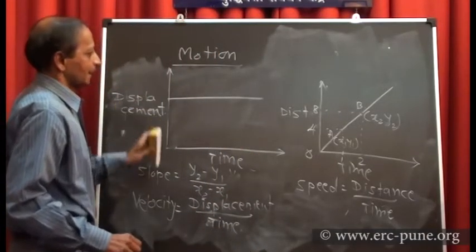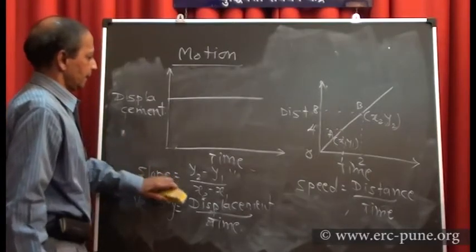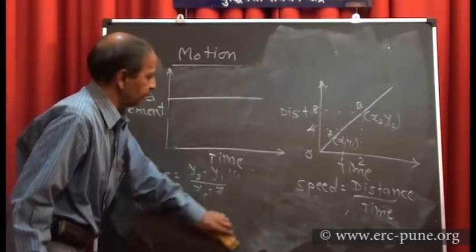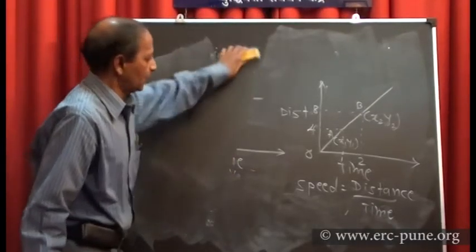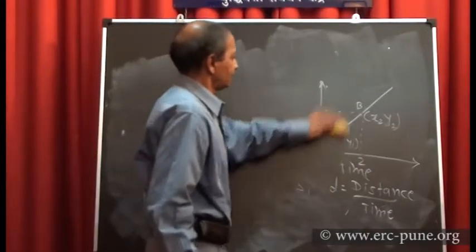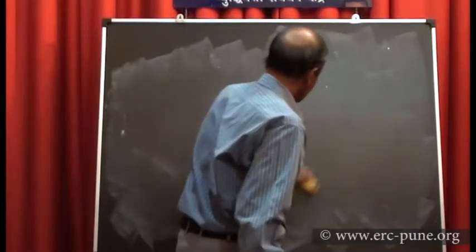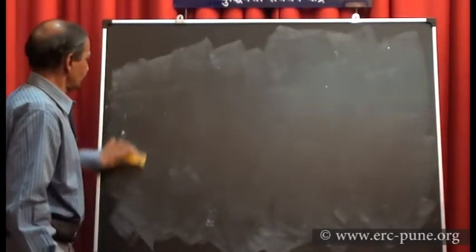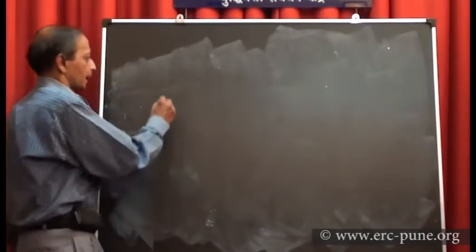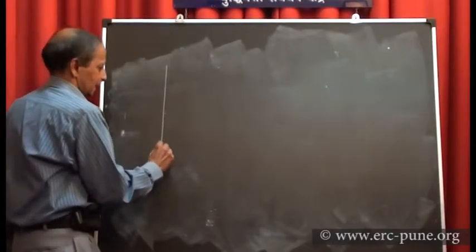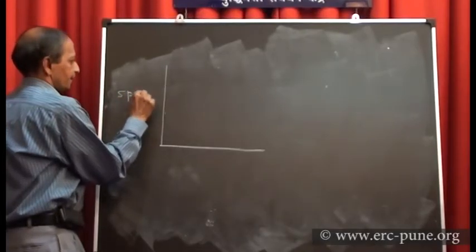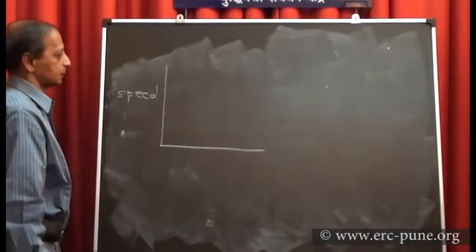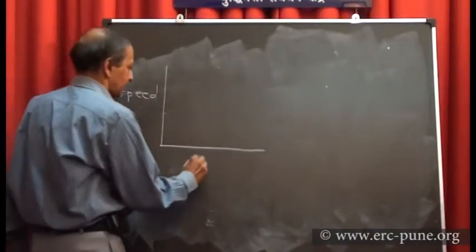These are the graphs of displacement versus time and distance versus time. The next graph we are going to study is the velocity versus time graph or speed versus time graph. These graphs are very important because from them we can find out various quantities associated with the motion of the body.